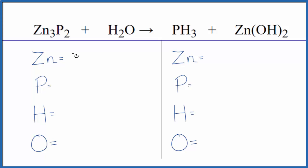Let's count the atoms up. Three zinc atoms, two phosphorus, two hydrogen, and then just the one oxygen.